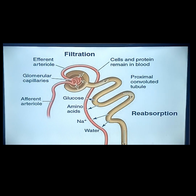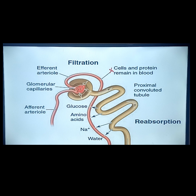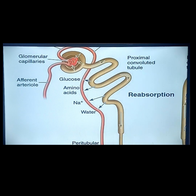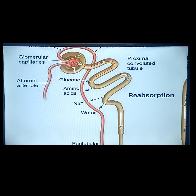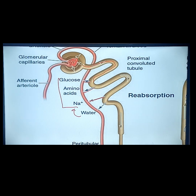From the afferent arterioles, blood goes into the glomerulus where filtration takes place. The blood cells and protein continue into the efferent arterioles and maintain osmotic pressure. Whatever is filtered goes to the Bowman's capsule into the proximal tubules. The arterioles, having high osmotic pressure, absorb excess glucose, amino acids, and sodium. These solutes absorb water, so when the arterioles reabsorb them, the water follows into the arterioles.